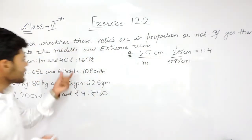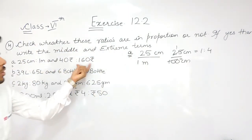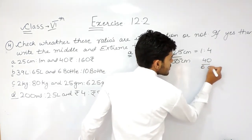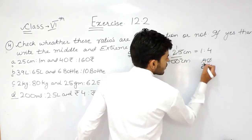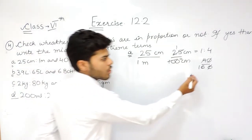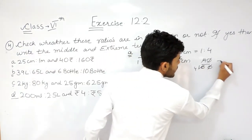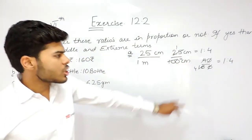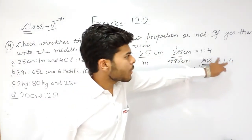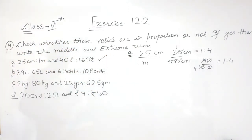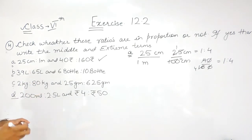On the right hand side it says 40 rupees ratio 160 rupees. So the ratio will be 40 upon 160, which again comes out to be 1 ratio 4. So these two ratios are equal, which means this statement is in proportion.